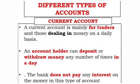Let us know different types of accounts. Current account: A current account is mainly for traders and those dealing in money on a daily basis. An account holder can deposit or withdraw money any number of times in a day. The bank does not pay any interest on the money in this type of account. The bank also issues a passbook for this account and also a checkbook on demand.